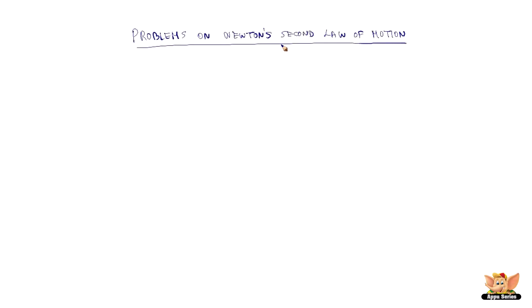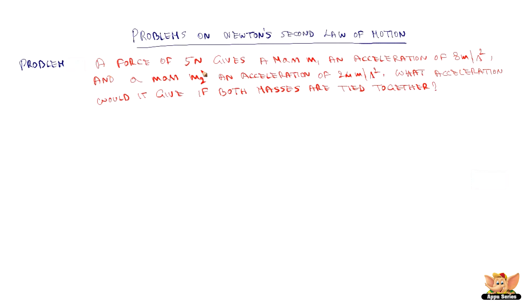Problems on Newton's Second Law of Motion. A force of 5 Newton gives a mass m1 an acceleration of 8 meters per second square and a mass m2 an acceleration of 24 meter per second square. What acceleration would it give if both masses are tied together?